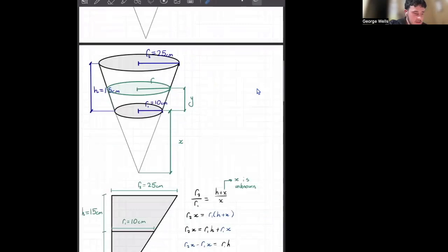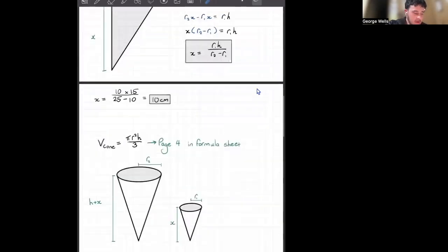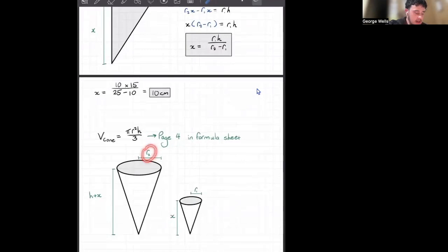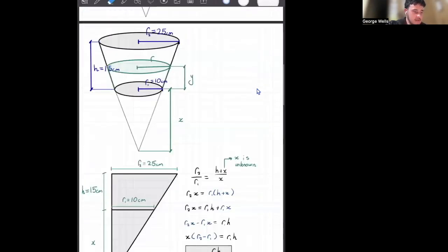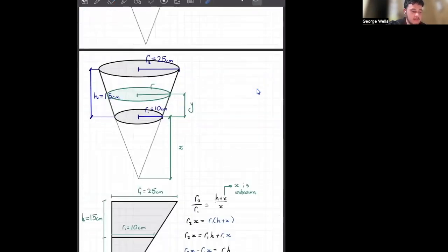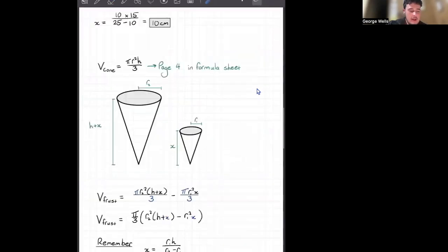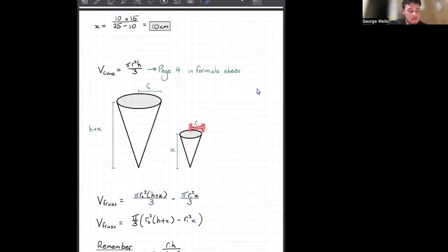Our big cone, which is this whole thing here. We've got the radius is r2 and the height is h plus x. You go up here, you can see x, h. That's going to be the total height of the cone. Then the little cone has radius of r1 and a height of x.